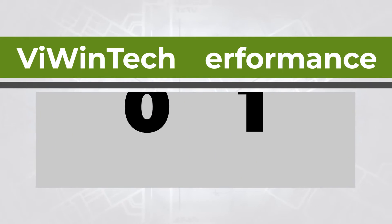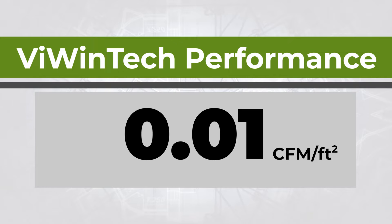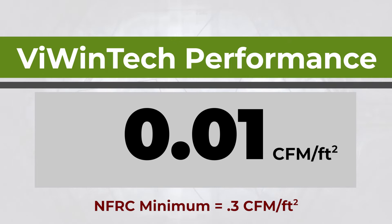The amount of air infiltration through any window depends on the size and style of the window. The very best performing Viwintec windows are rated at 0.01 CFM per square foot, which is 30 times more efficient than the minimum required by the NFRC at reducing air leakage.